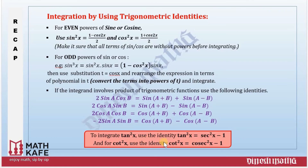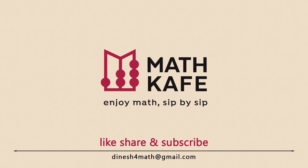Keep in mind the basic identities: tan²x = sec²x - 1 and cot²x = csc²x - 1 to complete this section. Thank you for watching Math Cafe - hope you enjoyed the video. Like, subscribe and share. The next video will continue with more questions based on integration using trigonometric identities.